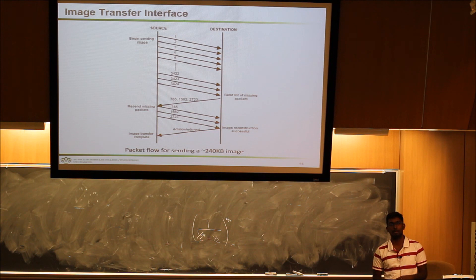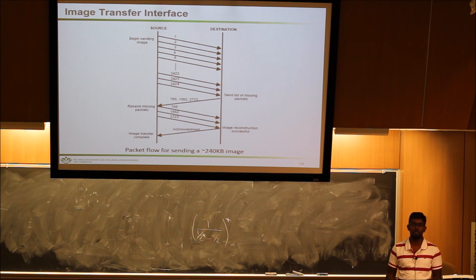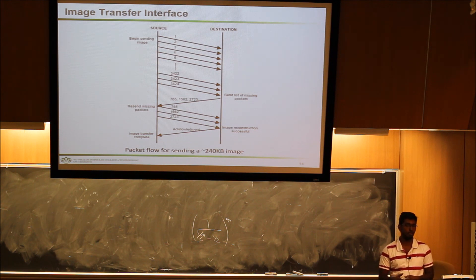The source would then retransmit those specific packets. This goes on until the destination node, which here is our image processing server, receives all the packet information required to completely reconstruct this image. It would then send an acknowledgement that the image transfer is complete.